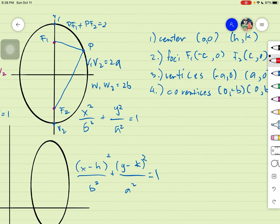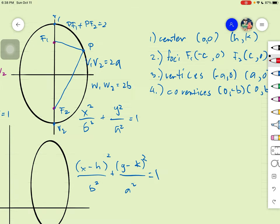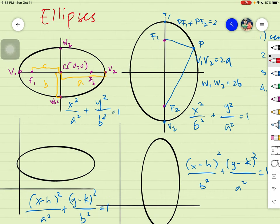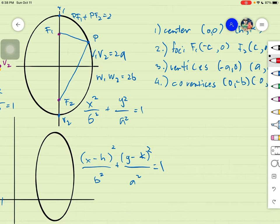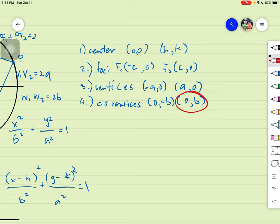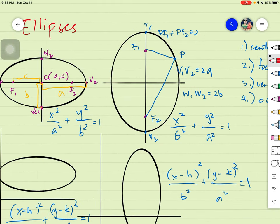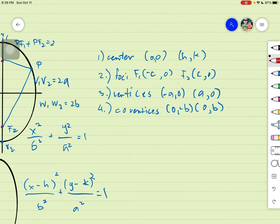And then our co-vertices, which is b co-vertices. Therefore, it's b units up and b units down. If it is up, it's positive value. And if it is down, it's a negative value. So meaning, for our given, the first given, we will refer to these following values.